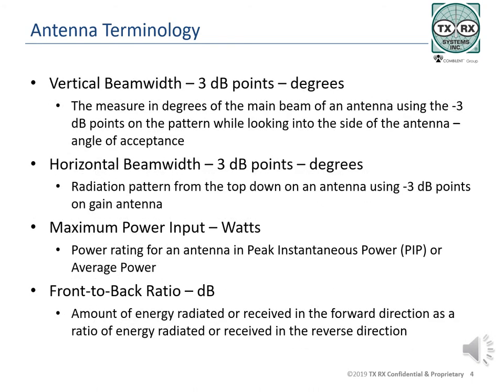Continuing with terms and terminology, the following are also used in working with antennas and coverage. The vertical beam width is the pattern of the radiated energy perpendicular to the main length of the antenna. It indicates the direction of the radiated energy as specified in degrees at the 3 dB points on the main lobe. Both vertical and horizontal beam width are given relative to the polarization of the antenna. The horizontal beam width is measured in degrees at the half power points of the antenna's horizontal beam parallel to the surface of the ground. Both vertical and horizontal beam width are also known as the angle of acceptance.